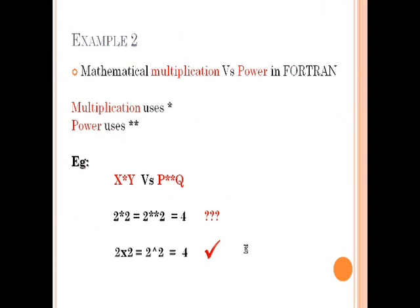Another example is mathematical multiplication and power in Fortran, which also violates this principle — the same symbol is used to multiply two numbers, but when you use those same symbols doubled, you get the power of a value, which is really confusing. But if you check a good example, to multiply two values it uses different symbols, and to get the power it uses totally different symbols. Therefore, it is easy to remember and easy to understand. This is a good programming concept. If you do not violate these principles, the programmer or user can easily remember and read the code.